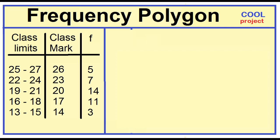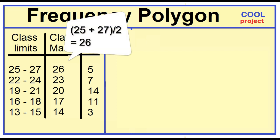The class mark is just the midpoint of each class. Just add the lower limit and the upper limit, then divide it by 2. For example, 25 plus 27 is 52 divided by 2 is 26.